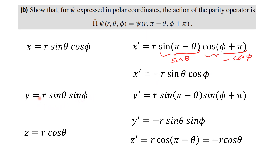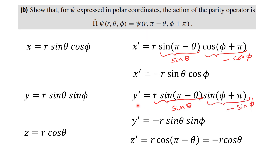Similarly for y: y = R sin(theta) sin(phi). Replacing theta with pi minus theta and phi with phi plus pi — sin(pi minus theta) equals sin(theta), and sin(phi plus pi) equals minus sin(phi). So y-prime becomes minus R sin(theta) sin(phi), meaning the sign changes to negative as well.